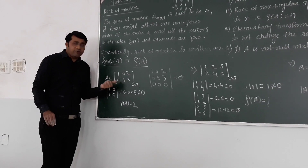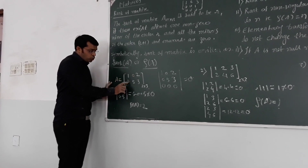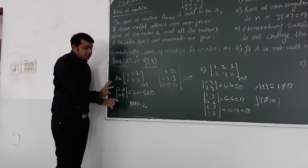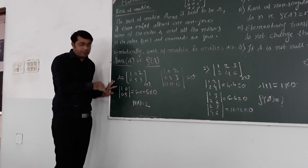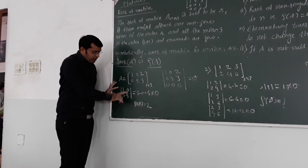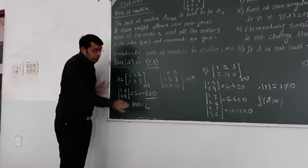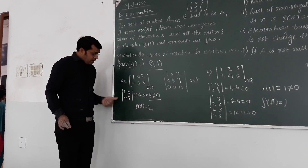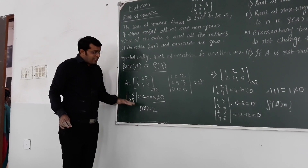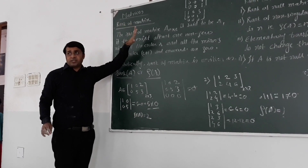The highest minors we get from this matrix are 2 by 2. So I collect here: 1, 0, 0, 5. A minor is nothing but a determinant. I calculate this: 1×5 minus 0×0, which comes to be 5, which is non-zero. This is a minor of order 2, and therefore the rank of this matrix will be 2 according to the definition.